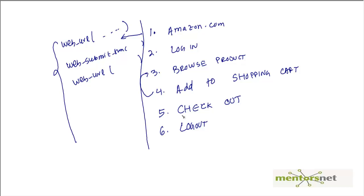Out of all these steps, checkout is the most important. If checkout fails, amazon.com will be in big trouble — nobody wants that. Your browse product might fail and that's okay, you can browse another product. But if checkout fails, that's where the money is involved, and that's going to be a loss of revenue for amazon.com.